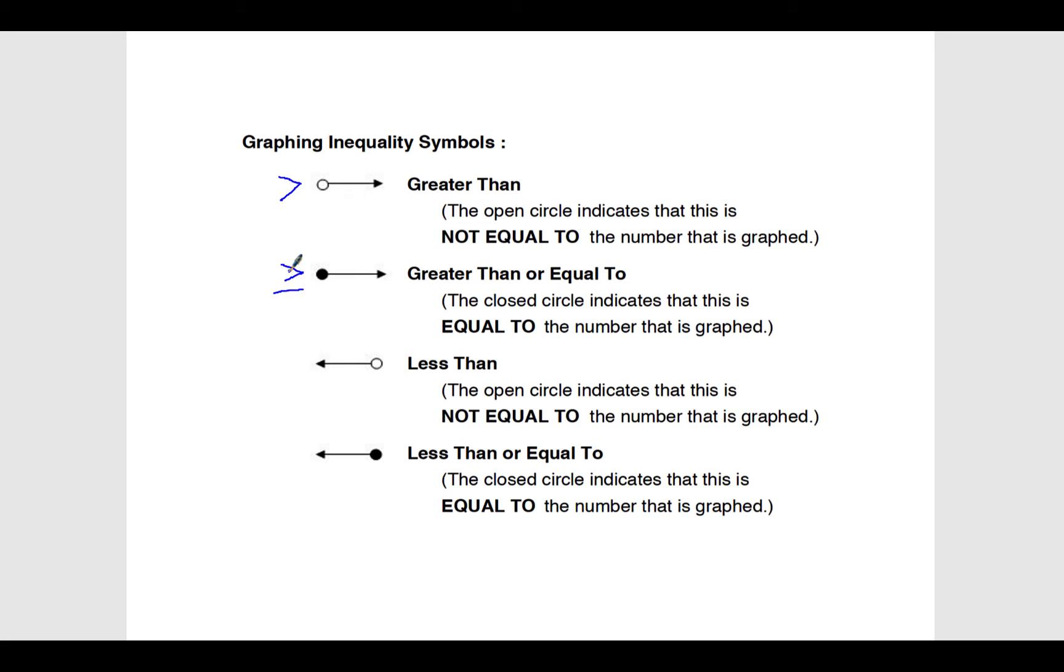Notice that if you imagine this as the point of an arrow, it points in the direction that the values are true for that inequality. So in this direction, it will be less than. Arrows pointing to the left, and all the values that we want are to the left.